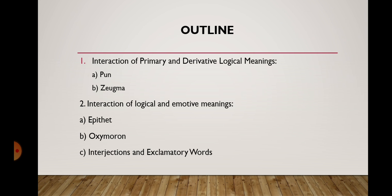The outline of the lecture includes the following points. First, interaction of primary and derivative logical meanings, within which we will consider pun and zeugma. And the second, interaction of logical and emotive meanings, within which we will discuss epithet, oxymoron, interjections and exclamatory words.